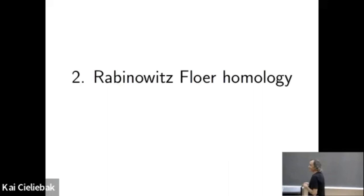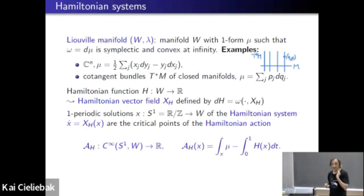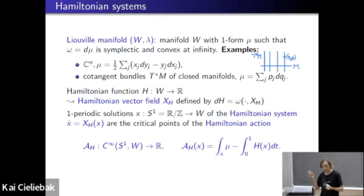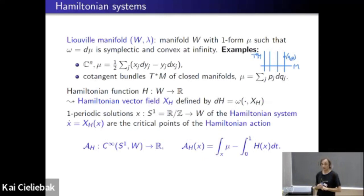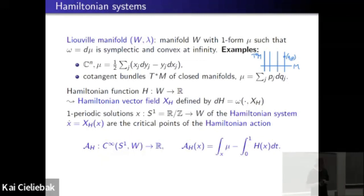Now comes a bit of symplectic geometry. I'll go to a symplectic setup: an exact symplectic manifold. There's a typo on the slide — it should be (W, μ), since I wanted to reserve λ for the Lagrange multiplier. It's a manifold equipped with a one-form μ such that dμ is symplectic. We impose some convexity condition at infinity if the manifold is non-compact. We call this a Liouville manifold. The two main examples we need are: C^N with the standard one-form, and the cotangent bundle of any manifold M with its canonical one-form.